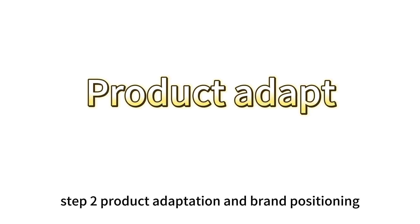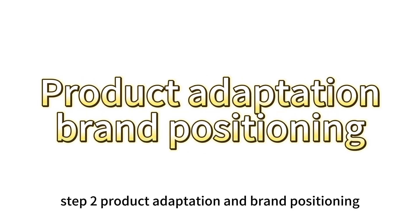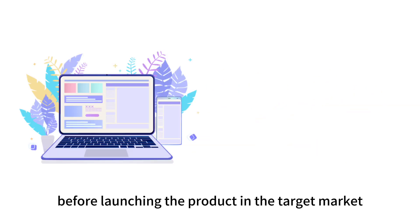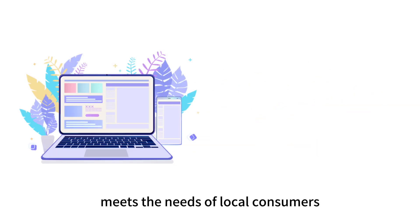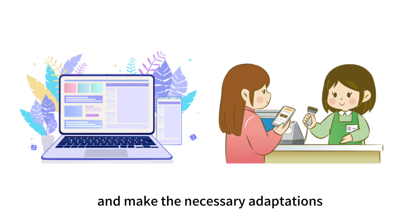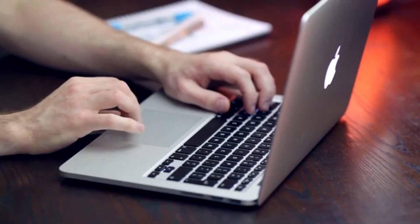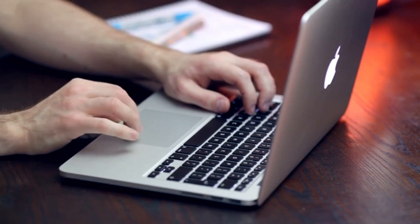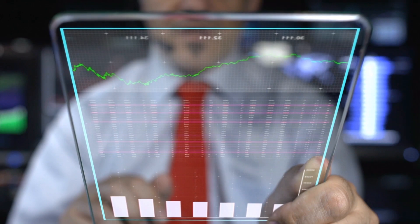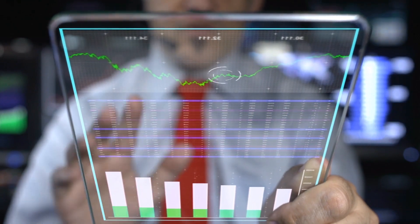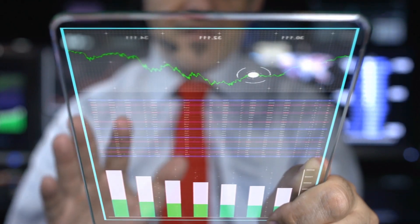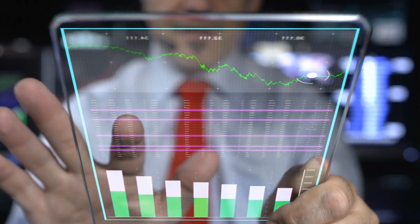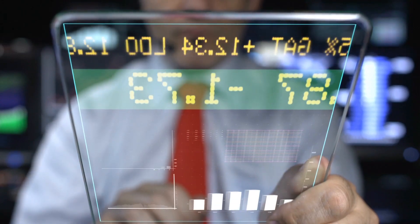Step 2: Product Adaptation and Brand Positioning. Before launching the product in the target market, ensure that the product meets the needs of local consumers and make the necessary adaptations. Product Adaptation: adapt the product to the culture, language, and regulations of the target market to ensure that it is adapted to local needs and standards.